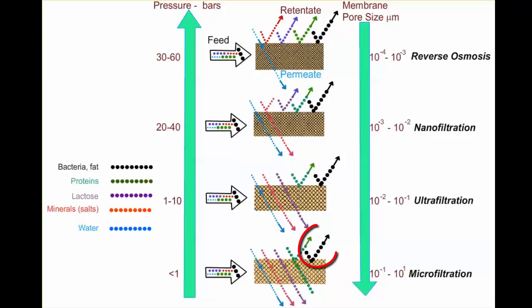...microfiltration, which has the largest pore size, will separate bacteria and fat, which are fairly large. Ultrafiltration will separate not only bacteria and fat, but also proteins.